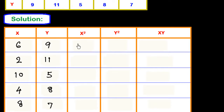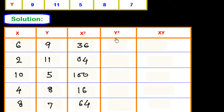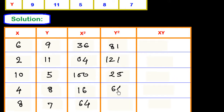In the x-squared column: 6 squared is 36, 2 squared is 4, 10 squared is 100, 4 squared is 16, and 8 squared is 64. For the y-squared column: 9 squared is 81, 11 squared is 121, 5 squared is 25, 8 squared is 64, and 7 squared is 49.